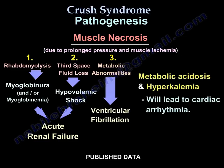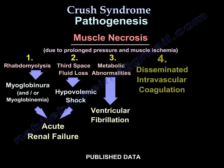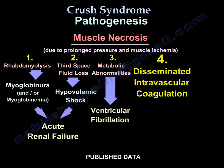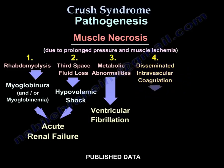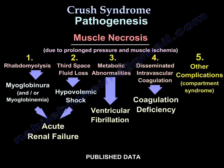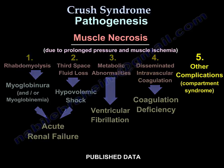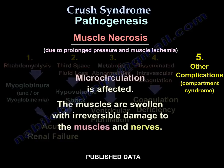Metabolic acidosis and hyperkalemia will lead to cardiac arrhythmia. Number four, disseminated intravascular coagulation will cause coagulation deficiency. Number five, other complications such as compartment syndrome — microcirculation is affected, and the muscles are swollen with irreversible damage to the muscles and nerves.